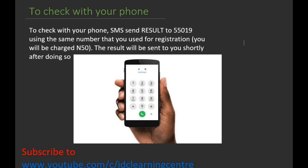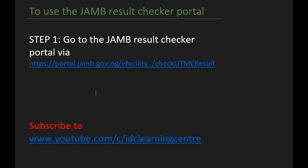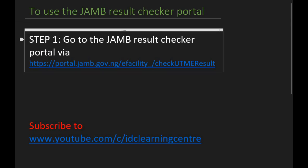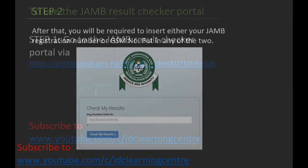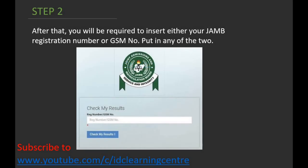If you wish not to check with your phone, you can use the JAMB result checker portal. All you need to do is go to the JAMB result checker portal — which you can see on the screen — portal.jamb.gov.ng.